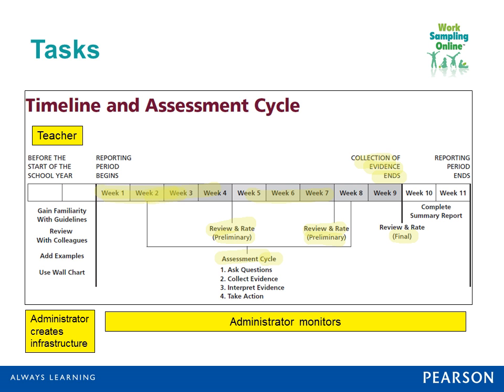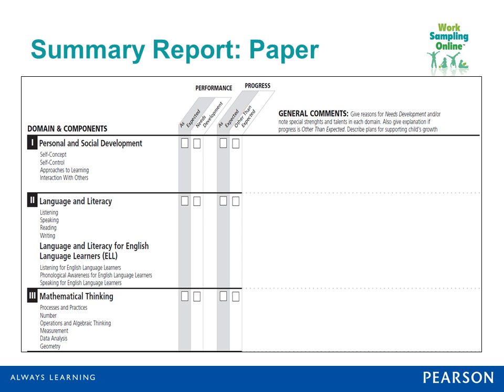The administrator, just like the principal in your school, is the one monitoring progress — making sure we are, in fact, assessing children's knowledge and skills formatively. There was a question about performance and progress: performance really has to do with whether the child is mastering the skills and demonstrating the expected abilities.